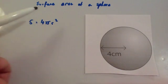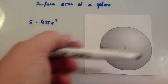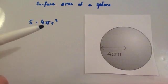In this video we're going to look at how to find the surface area of a sphere. So if you get a sphere, the surface area is given by the formula 4πr².